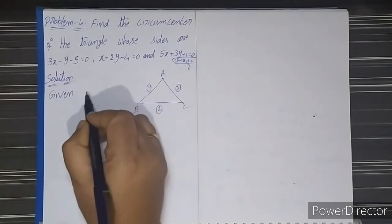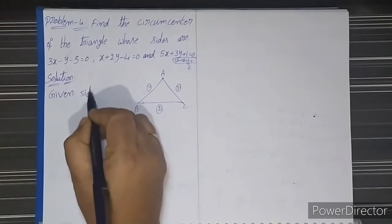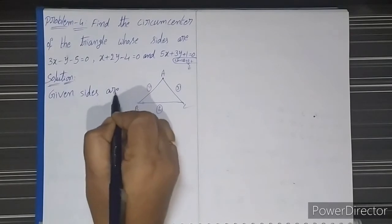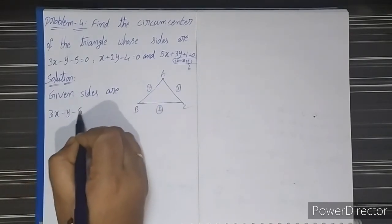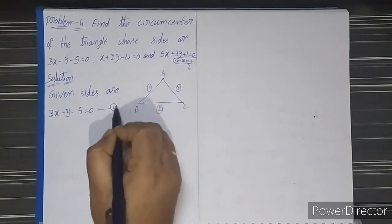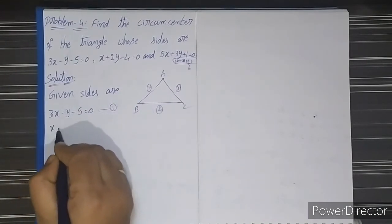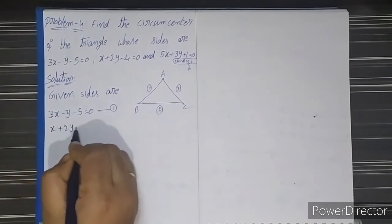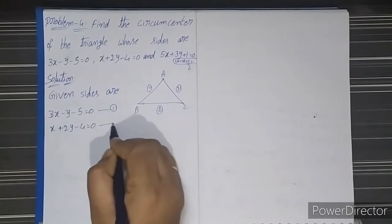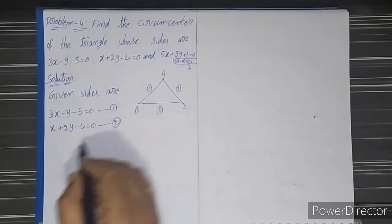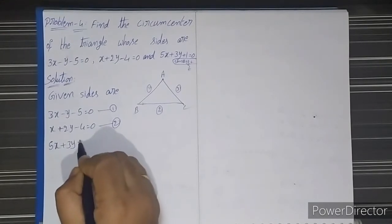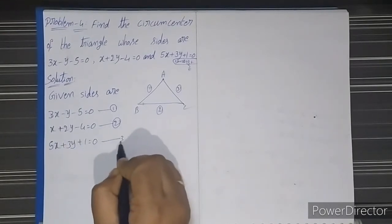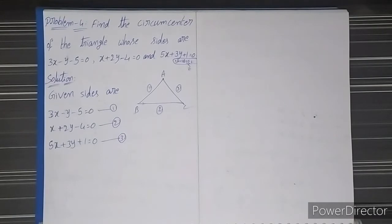The given sides of the triangle are: equation 1: 3x − y − 5 = 0; equation 2: x + 2y − 4 = 0; and equation 3: 5x + 3y + 1 = 0. First we have to solve these equations to find the vertices.